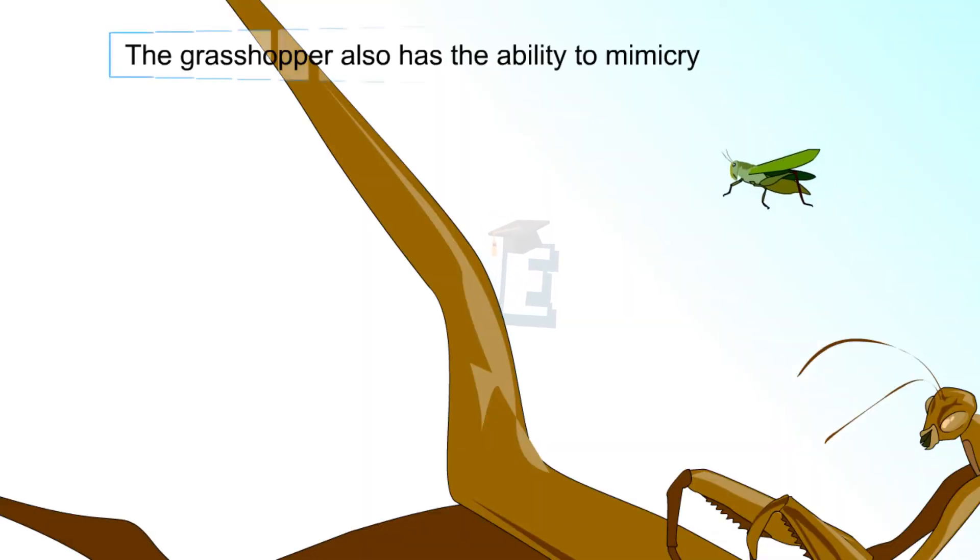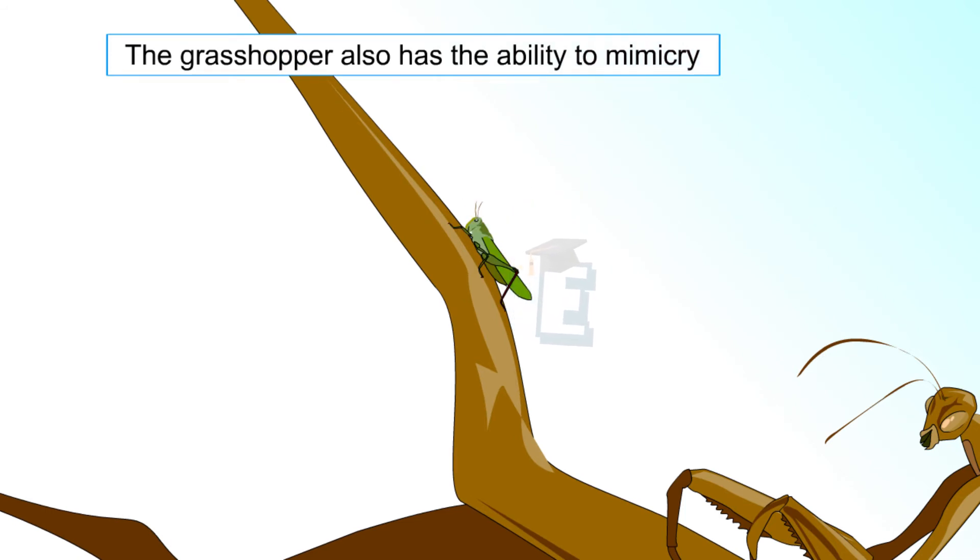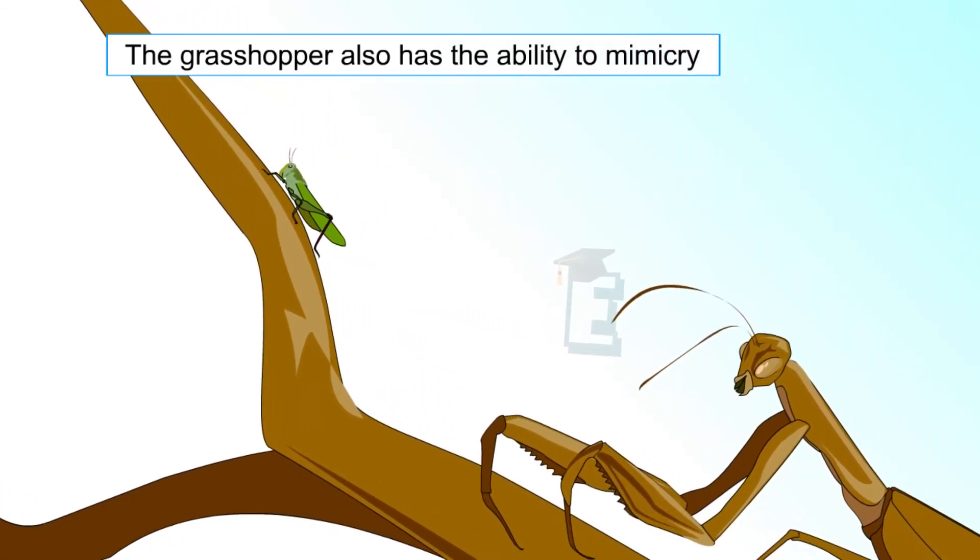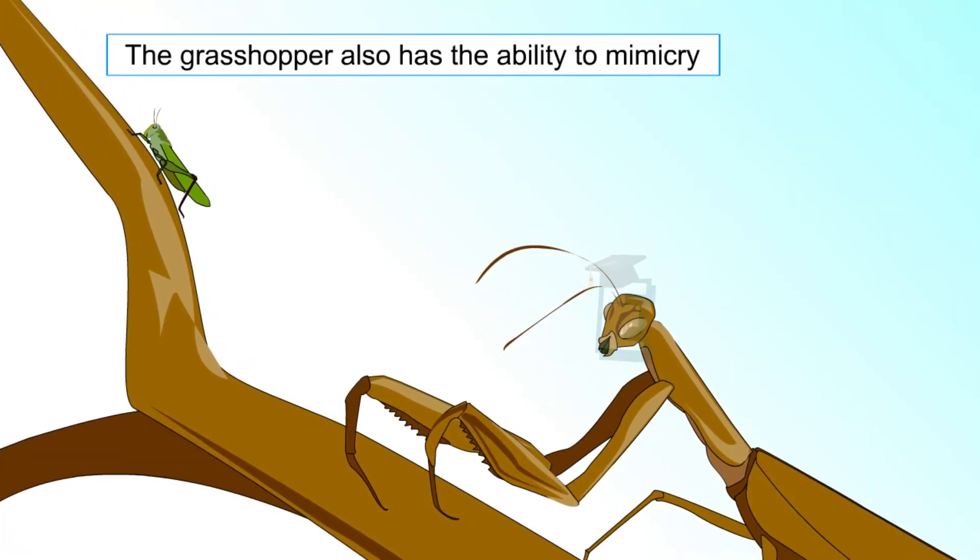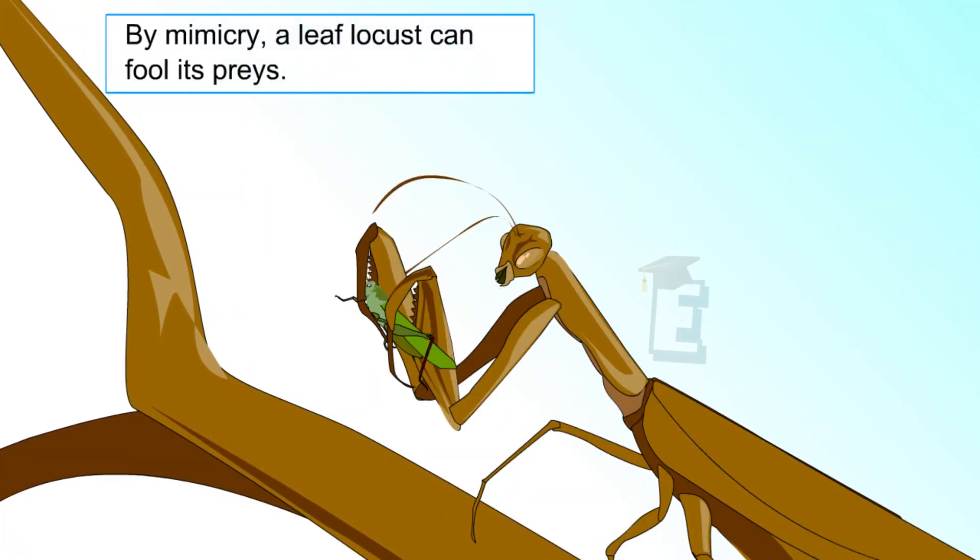Similar to the chameleon, the grasshopper's color mimics the grass or leaves so that it becomes less visible to its predator. The leaf locust mimics the tree branches so that it deceives its prey.